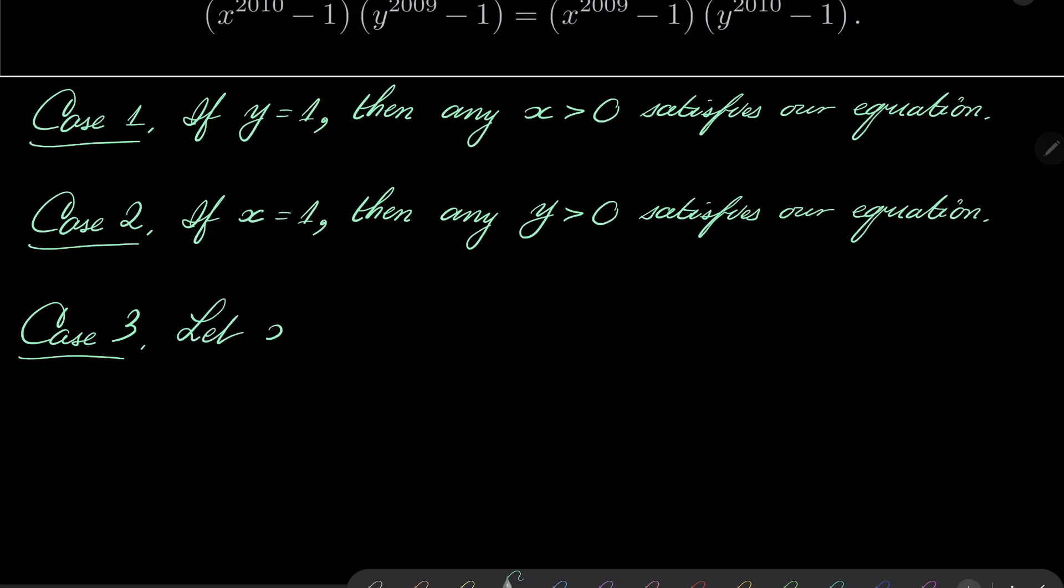Let's suppose that x is not 1 and y is also not 1. Then we can rewrite our equation in the following manner: x^2010 - 1 over x^2009 - 1 equals y^2010 - 1 over y^2009 - 1.